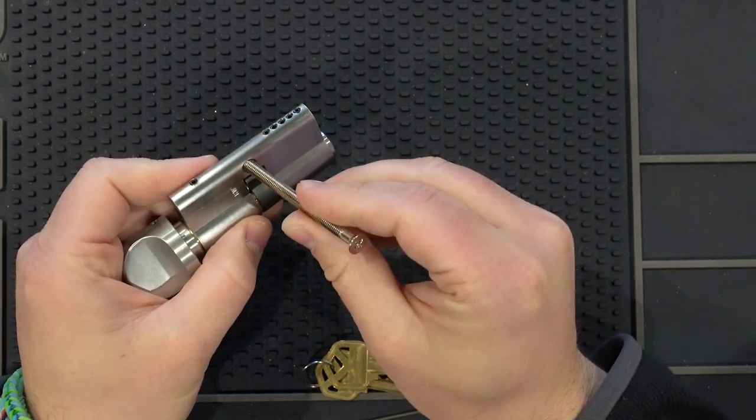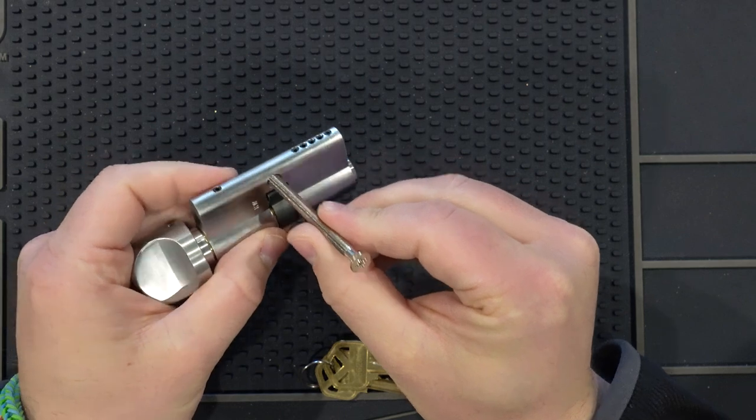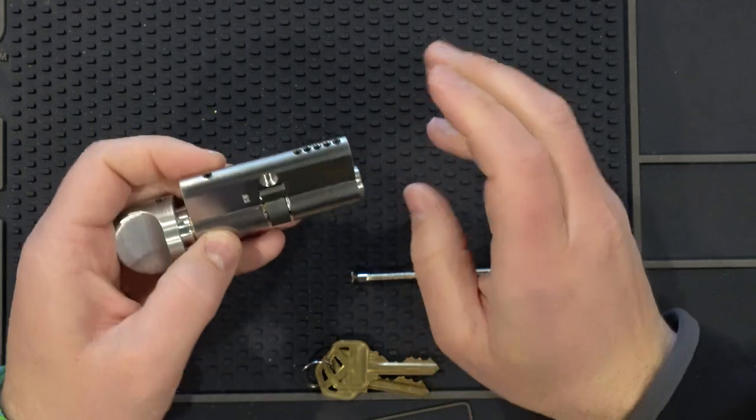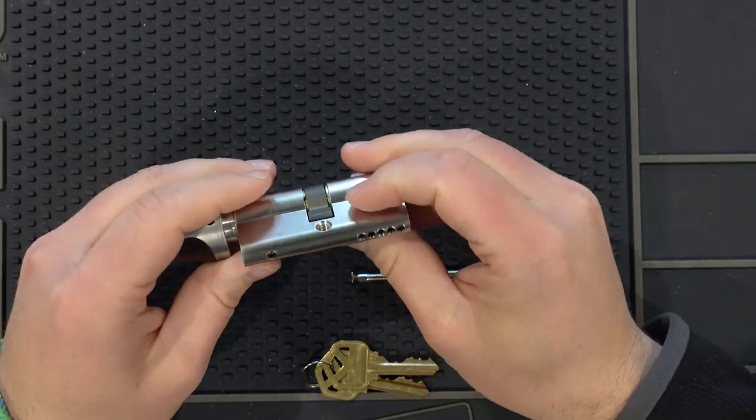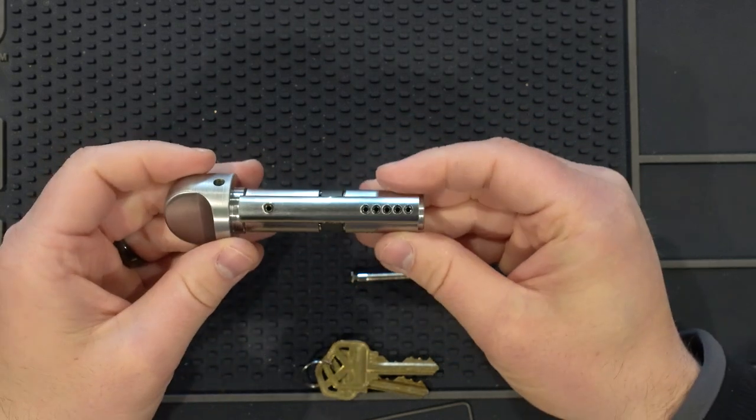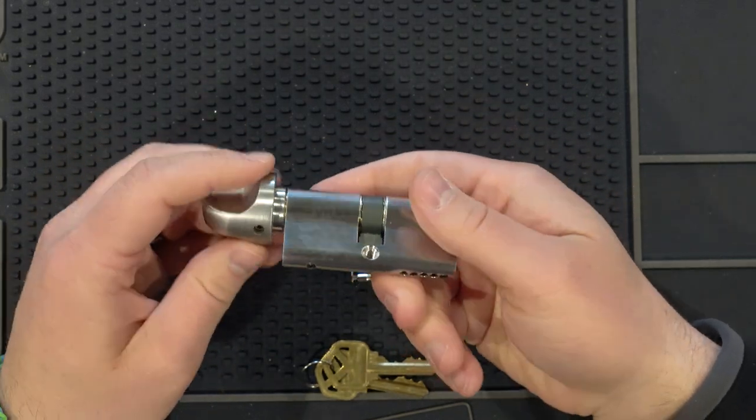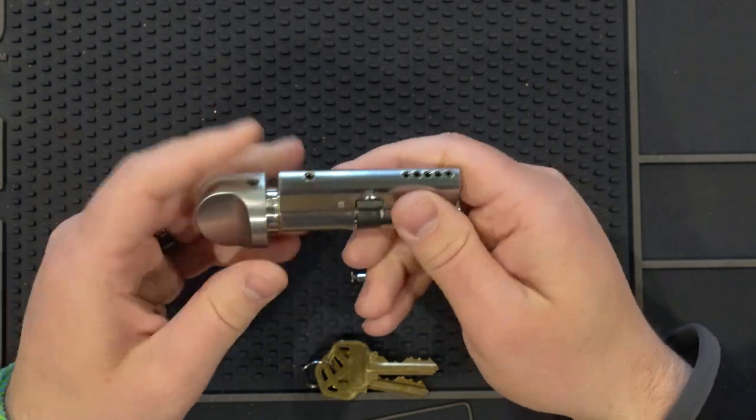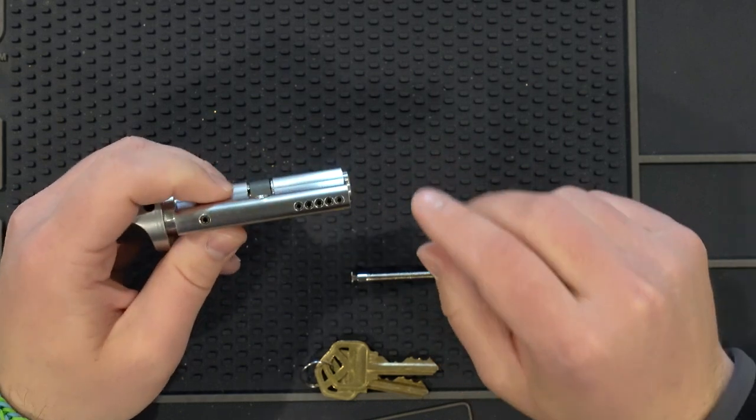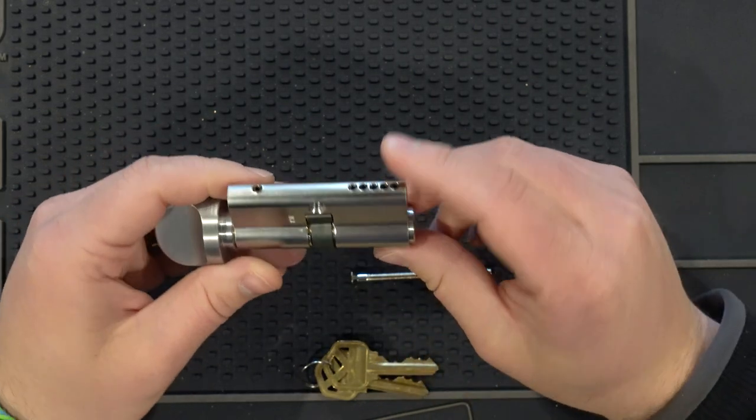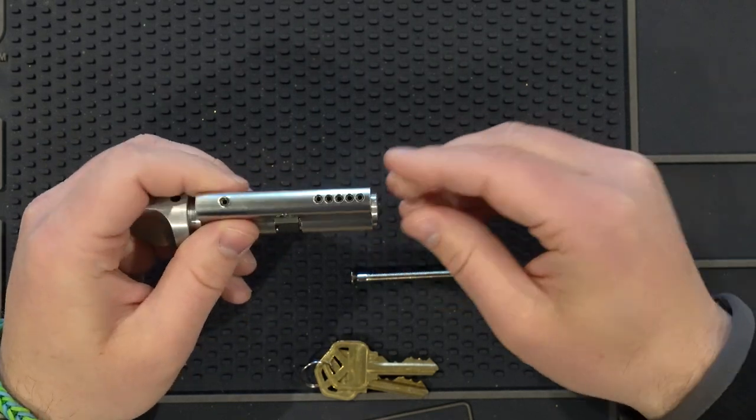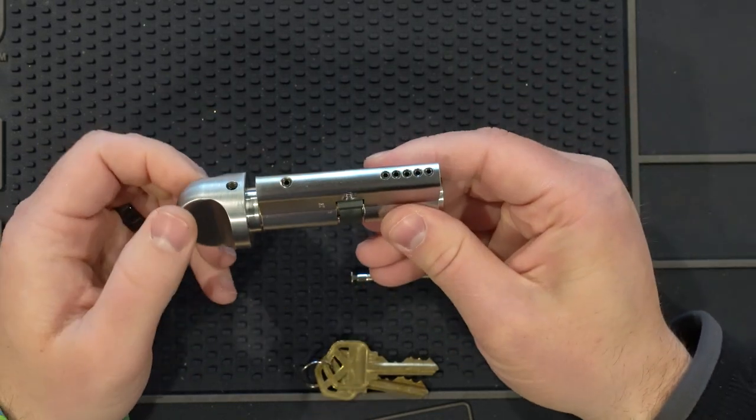When you go to take these out of the door, on the jam side there's going to be a screw here. Unfortunately, I don't have one to show you the full removal process, but they're pretty simple. You need to make sure you align the activator so it can slide in and out, and depending on the application you might need to take off the thumb turn as well. Now let's talk about the specifics, because there's something really important you need to know about these GMS profile cylinders - whether it's the single, the double, or the one with the thumb turn.